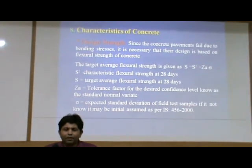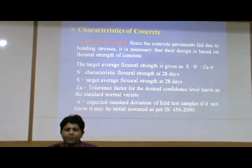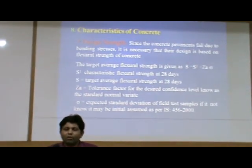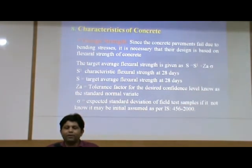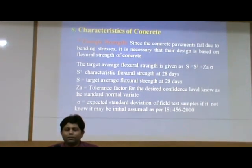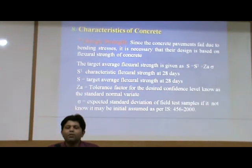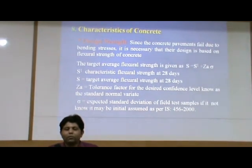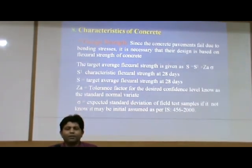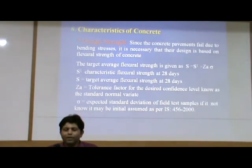Regarding characteristics of concrete, we first discuss design strength. Since concrete pavements fail due to bending stress, it is necessary that their design is based on flexural strength of concrete. The target average flexural strength is given as S equal to S-dash plus Z_A times sigma. Here S-dash is the characteristic flexural strength at 28 days, S is the target average flexural strength at 28 days, Z_A is the tolerance factor for the desired confidence level known as the standard normal variate, and sigma is the expected standard deviation of field test samples — if not known, it may be initially assumed as per Indian Standard 456-2000.